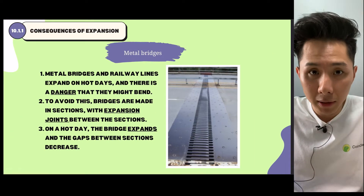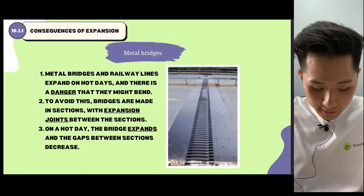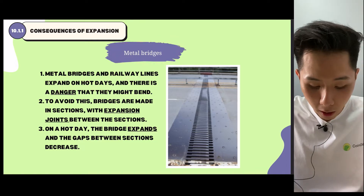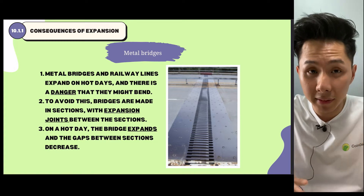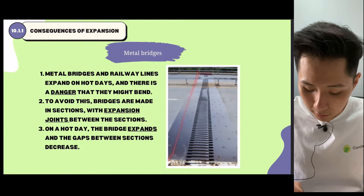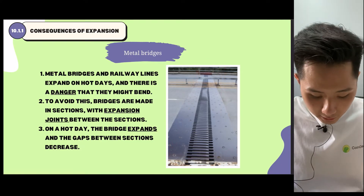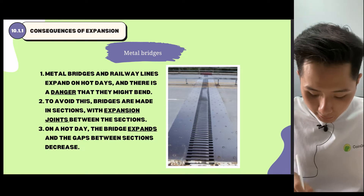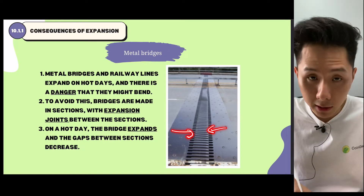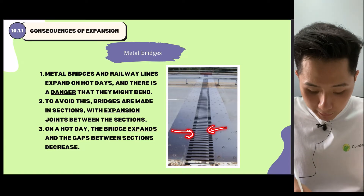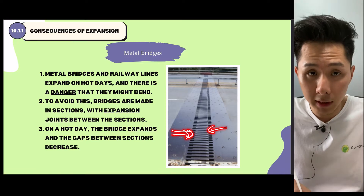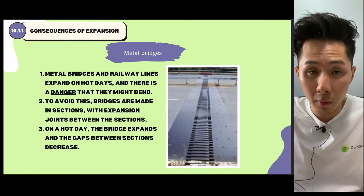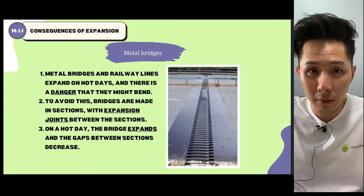The third type of application would be metal bridges, because metal bridges and railway lines often expand on hot days, so there's a danger that they might buckle. Therefore, bridge developers put expansion joints between each bridge section. On a hot day, the bridge expands and the gaps between each section decrease. This makes the bridge more flexible and removes the risk of it bending so that cars cannot travel over it.